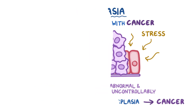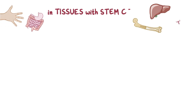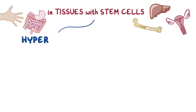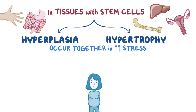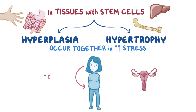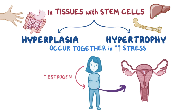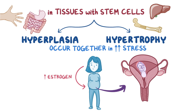It's important to remember that in tissues that have stem cells, hyperplasia and hypertrophy usually happen together when there's increased stress. For example, in pregnancy the uterus gets stimulated by estrogen, which leads to hypertrophy and hyperplasia of the smooth muscle cells in the uterine wall. This means that the cells get tougher and the pack of cells gets more numerous.